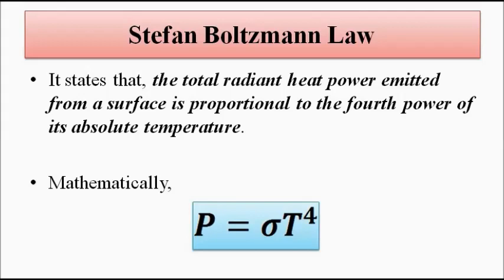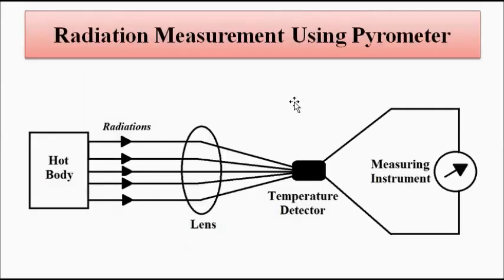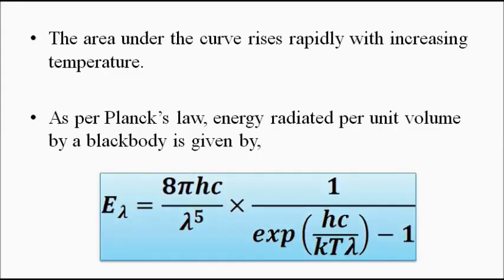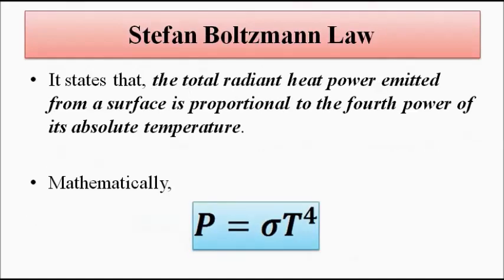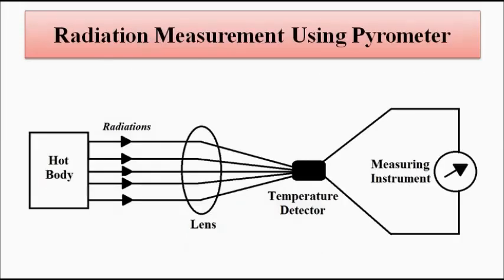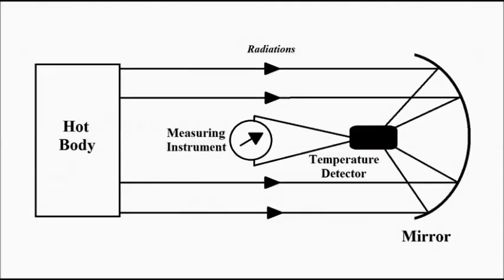This is the basic constructional setup of radiation measurement using pyrometers for temperature measurement. When we get the temperature, we can apply any of these laws to get the parameter we want — whether it is energy, wavelength, or any other thing. I hope you liked this video. Please subscribe to my channel, Engineering Tutorial, for more videos related to engineering, science and technology. Have a great day. Thank you very much.